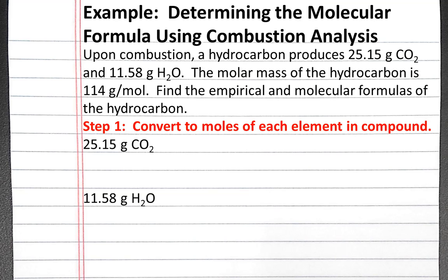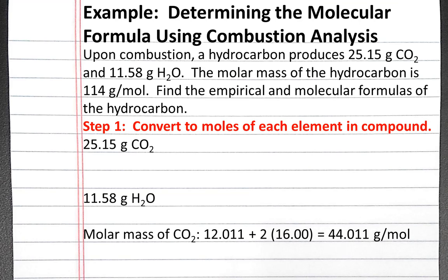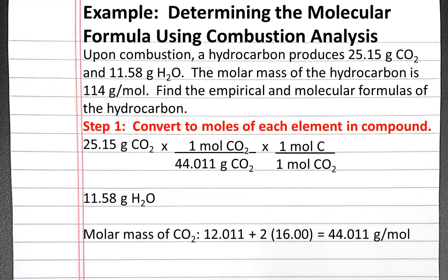To convert grams of carbon dioxide into moles of carbon dioxide, we need the molar mass. The molar mass of carbon dioxide is 12.011 plus 2 times 16, which is 44.011 grams per mole. We use this as a conversion factor to convert from grams of CO2 to moles of CO2, then use the chemical formula for CO2 to convert to moles of carbon. This gives us 0.5714 moles of carbon.